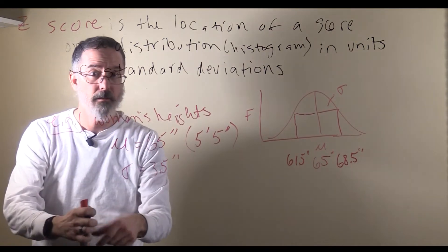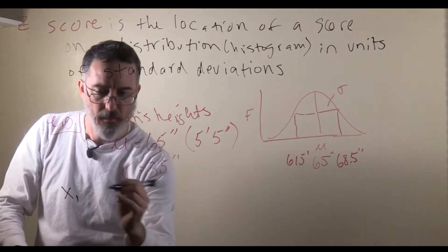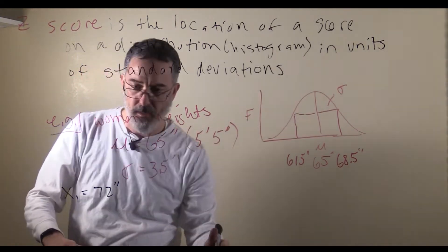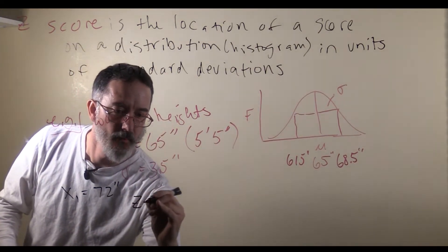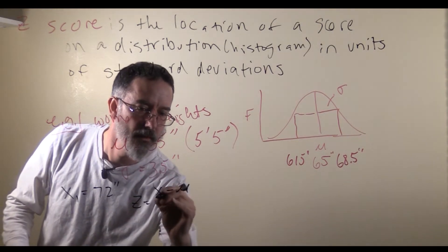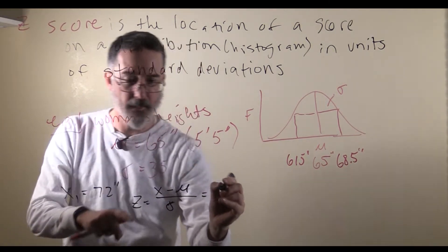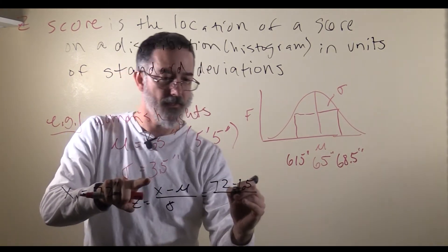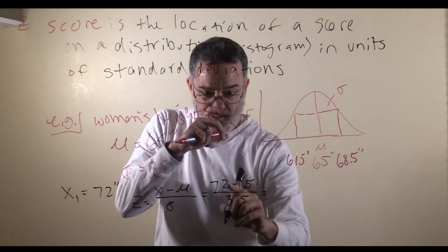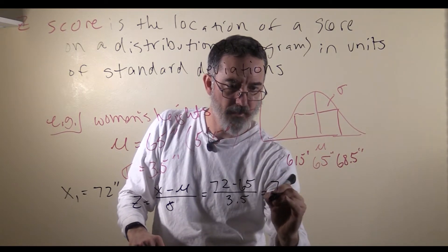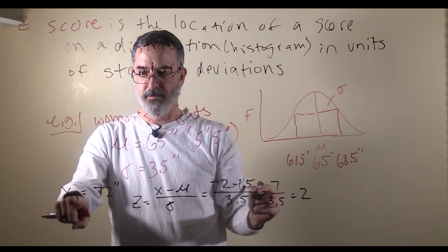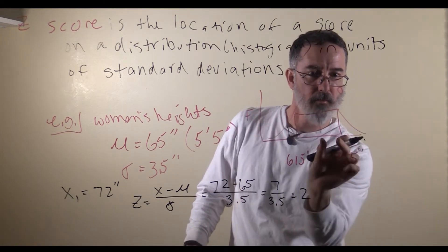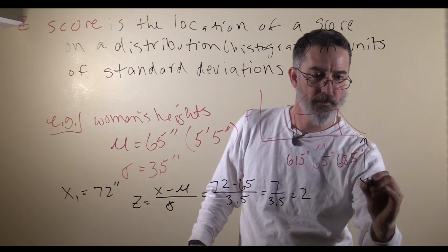Now let us consider a woman, x1, whose height is 72 inches. We are going to use the population z-score formula: z equals the score minus the population mean, divided by the population standard deviation. So z equals 72 minus 65, divided by 3.5. The z-score for this woman is 2 — she would be located about 2 standard deviations above the mean.